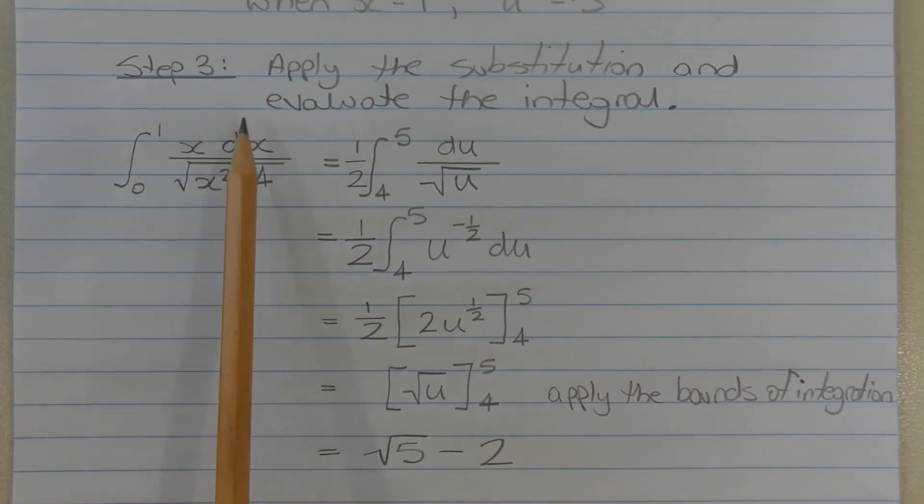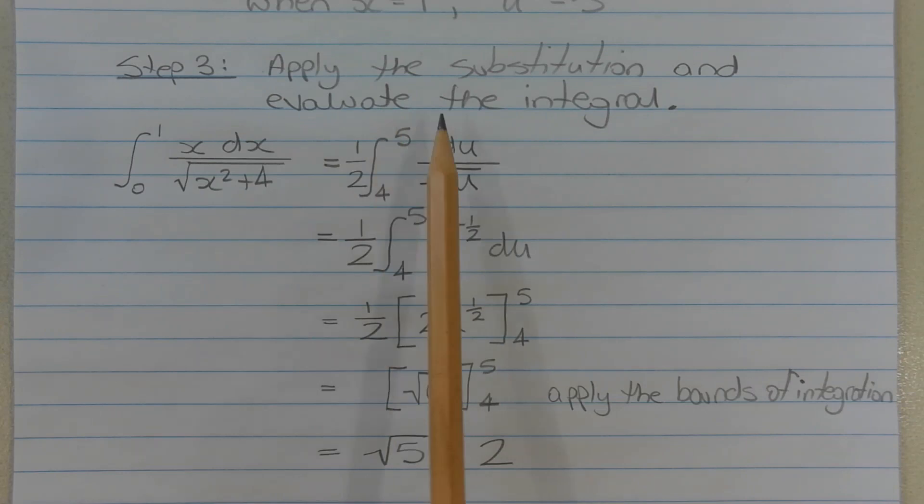The final step is to apply the substitution and evaluate the integral. The integral from x equals 0 to x equals 1 of x dx over the square root of x squared plus 4 is equal to half times the integral from u equals 4 to u equals 5 of du over the square root of u. Expressing the integrand in index form, that equals half times the integral from u equals 4 to u equals 5 of u to the power of negative half du.